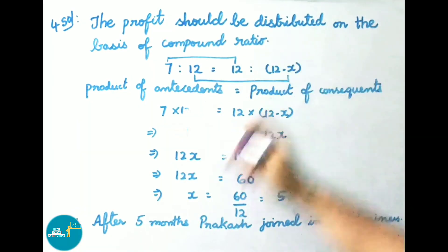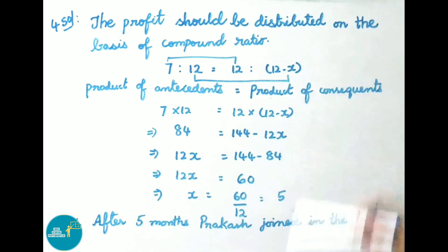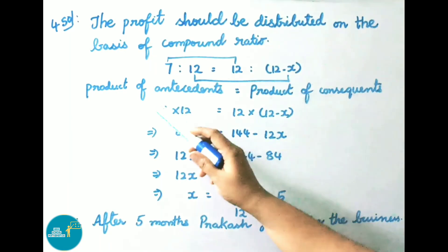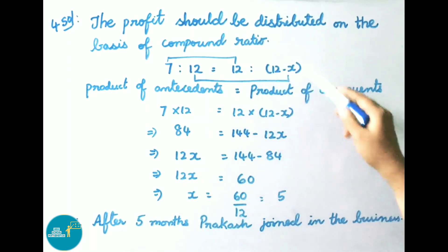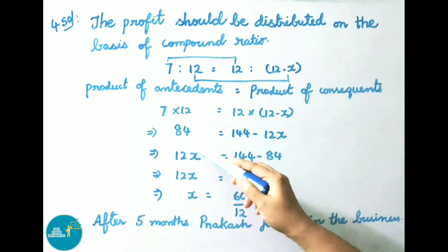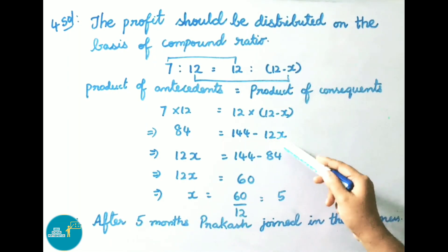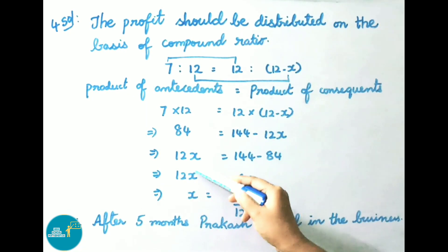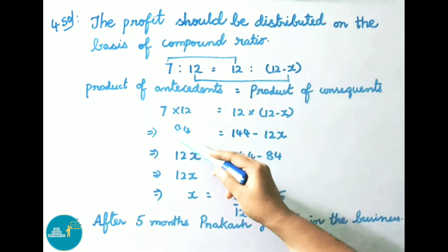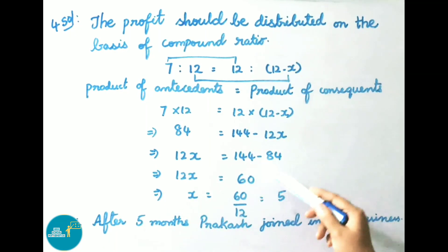The profit should be distributed on the basis of compound ratio. We have two ratios: 7 is to 12 and 12 is to 12 minus X. Since they got equal profit, using compound ratio formula, product of antecedents equals product of consequents: 7 into 12 equals 12 into 12 minus X. That gives 84 equals 144 minus 12X. Transposing, 12X equals 144 minus 84, that is 60.